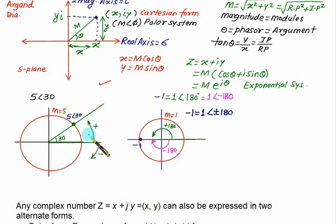Remember that anticlockwise is taken as positive and clockwise is taken as negative. This is how you can represent any complex number in either of the forms. You can represent it in Cartesian system, you can represent it in polar system, and even you can represent in Euler form also, that is m e to the j theta.